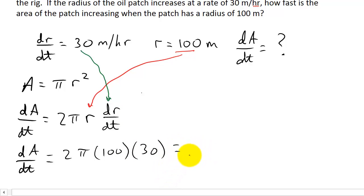And this is going to equal 6000π meters squared per hour. And this would be our answer. If you wanted to you could multiply 6000 by π to get a decimal answer, but we'll just leave it like this.